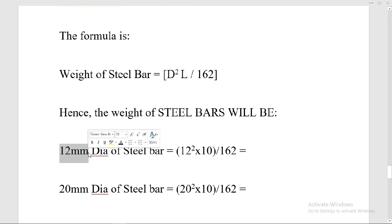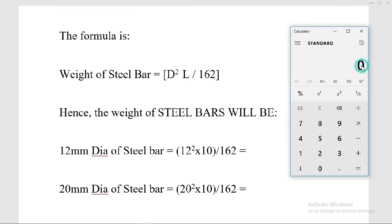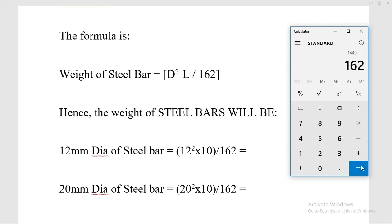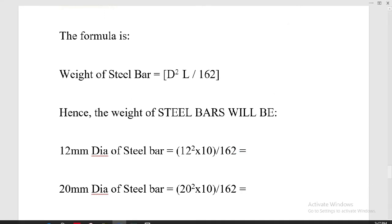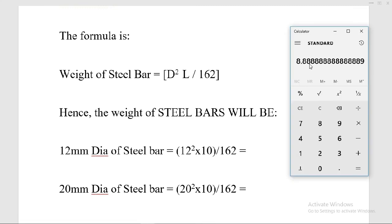For the 12 millimeter diameter steel bar: square of 12 is 144, then multiply with the length of the steel bar — the length is 10 — so that gives us 1440, divided by 162. This gives us the weight of the steel bar: 8.88 kg.